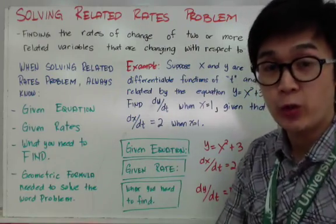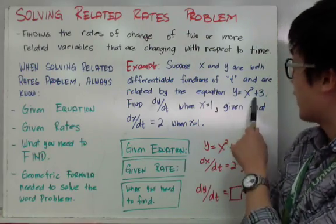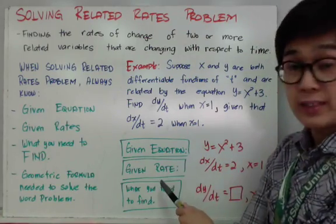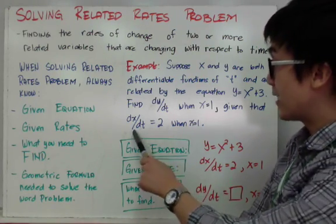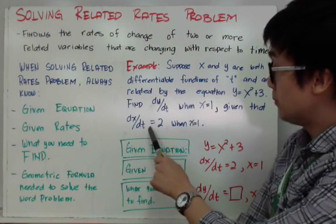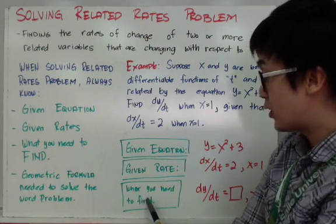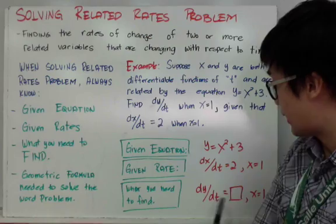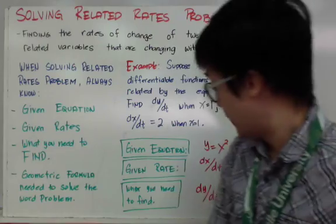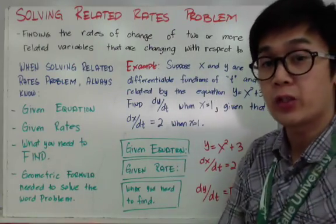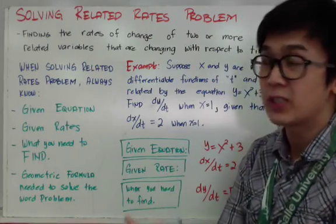To set up our equation, organize the word problem. First, the given equation is y equals x squared plus three. The given rate is dx over dt, which equals two when x equals one. What we need to find is dy over dt when x equals one. There will always be a given rate and a derivative you need to find in related rates problems.